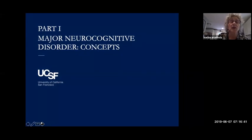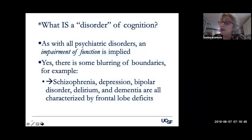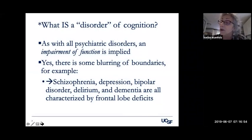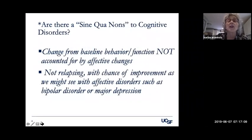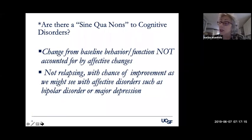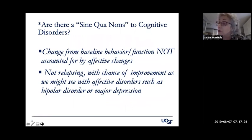What is a disorder of cognition? As with all psychiatric disorders, functional impairment is observed and is actually a criterion. Daily function is largely organized by the frontal lobes, and there's a blurring of boundaries — schizophrenia, bipolar disorder, depression, and delirium are all characterized by frontal lobe impairment. The sine qua non is a change from baseline behavior or function not accounted for by affective changes, and it is not a relapsing presentation — in other words, inexorably downward.